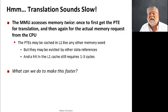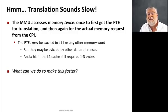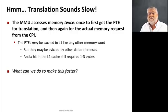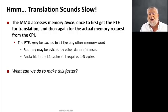We're executing quite a lot of operations to get this memory mapping to happen properly. The MMU accesses memory twice: once to get the page table entry for translation, and once for the actual memory request. Since page table entries are in fact in memory, they can be cached just like any other memory word — but they might get evicted by other data references, just like any other memory word.